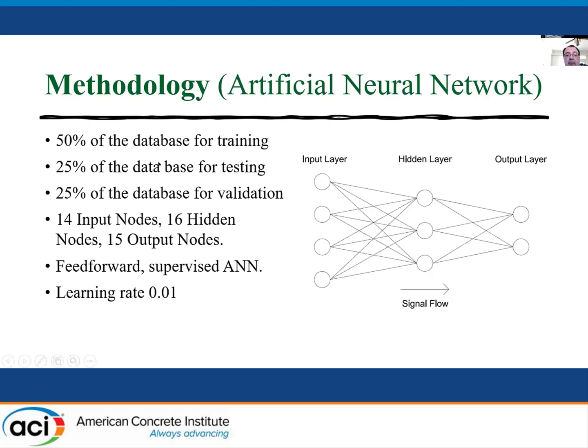We had about 11,000 data points or simulation results, and we actually augmented that with another 31,000 results from mirroring the crack locations, depths, and widths. So we ended up with 14 input nodes, 16 hidden nodes, and 15 output nodes. So it's a pretty big network.